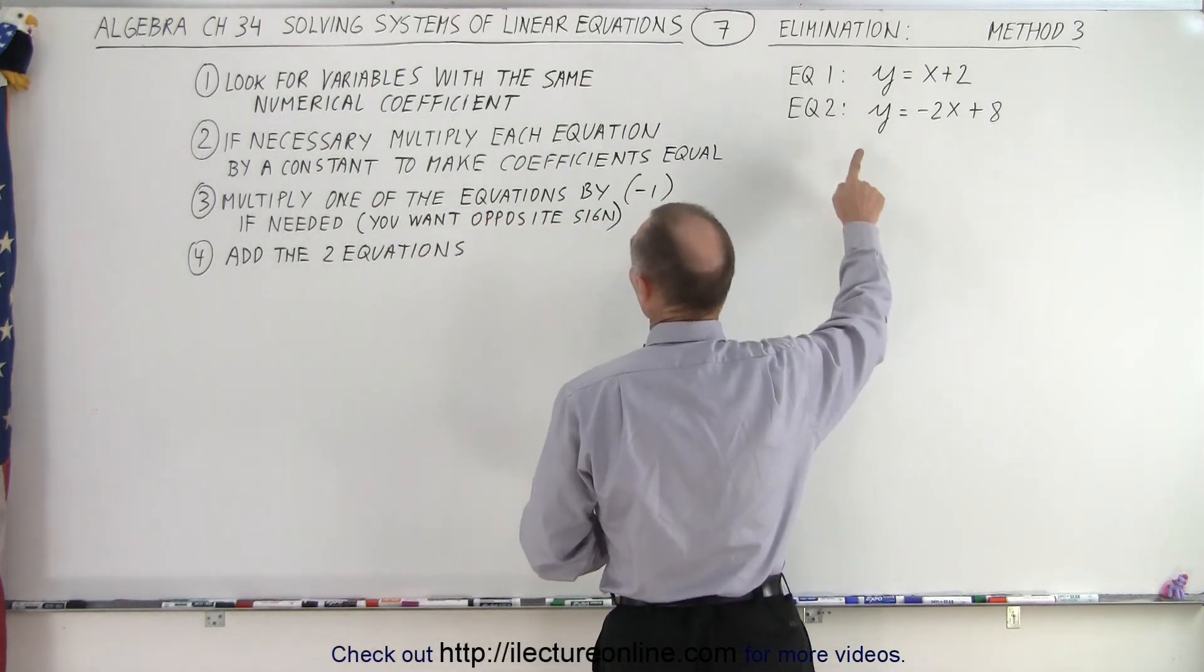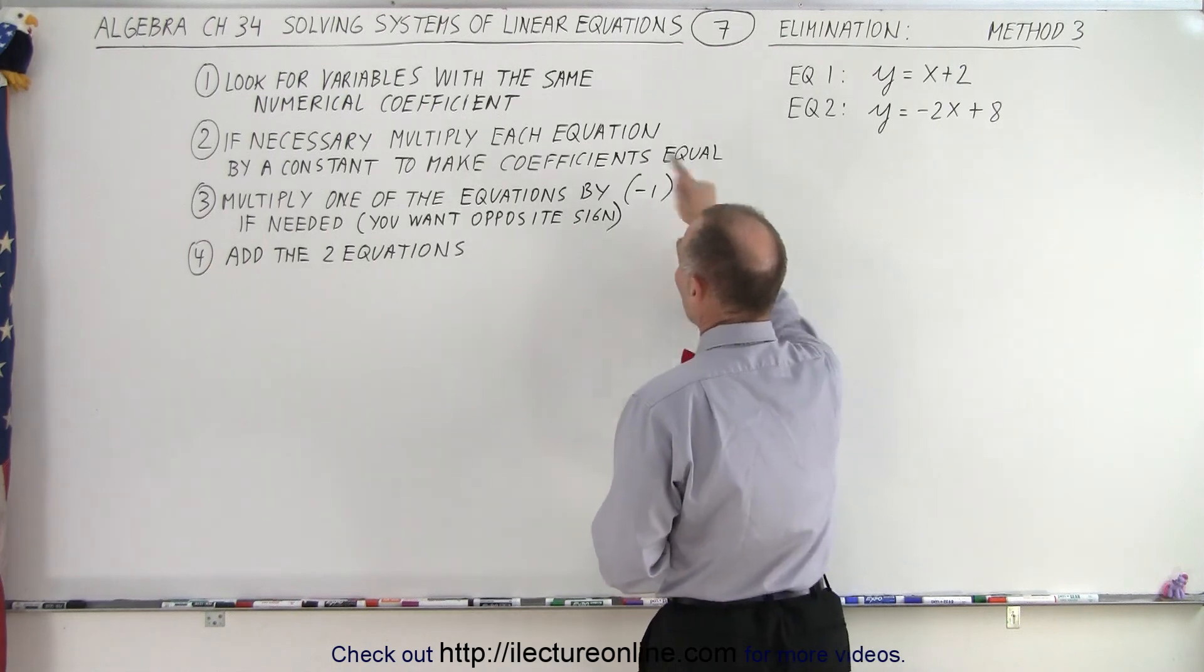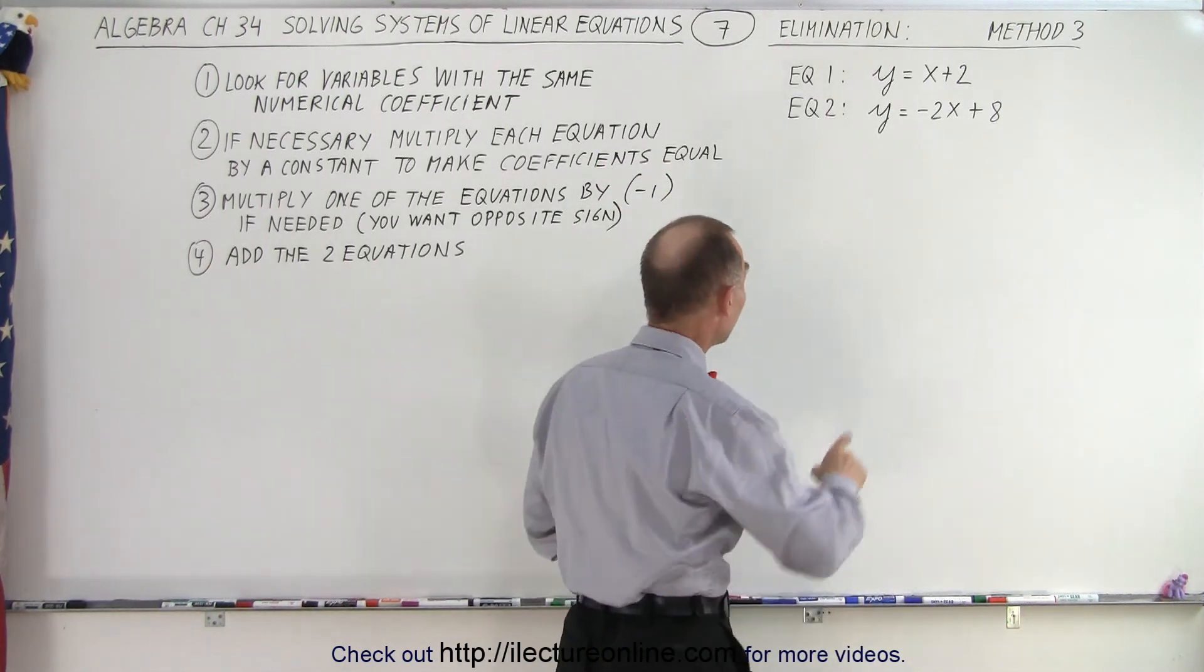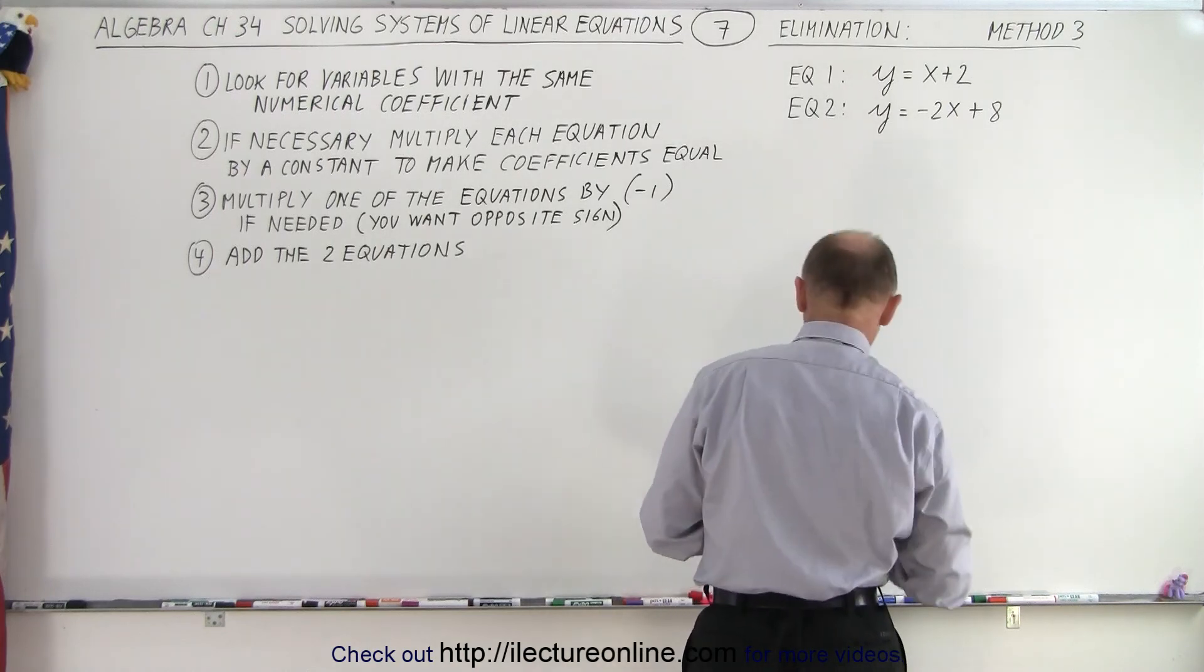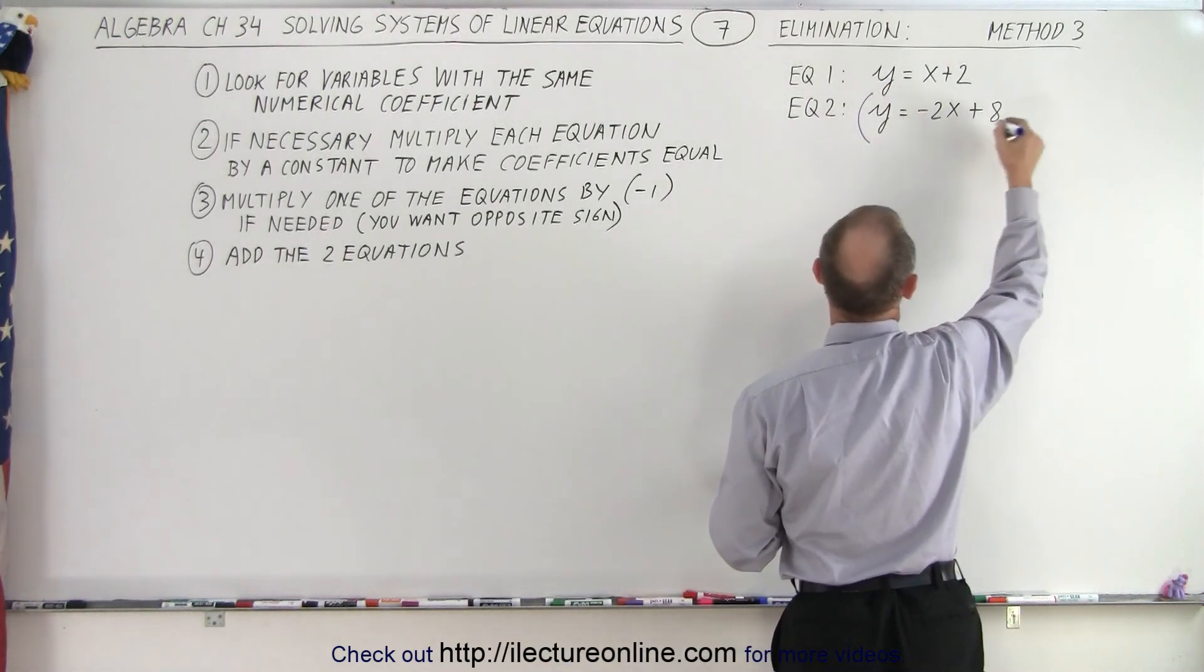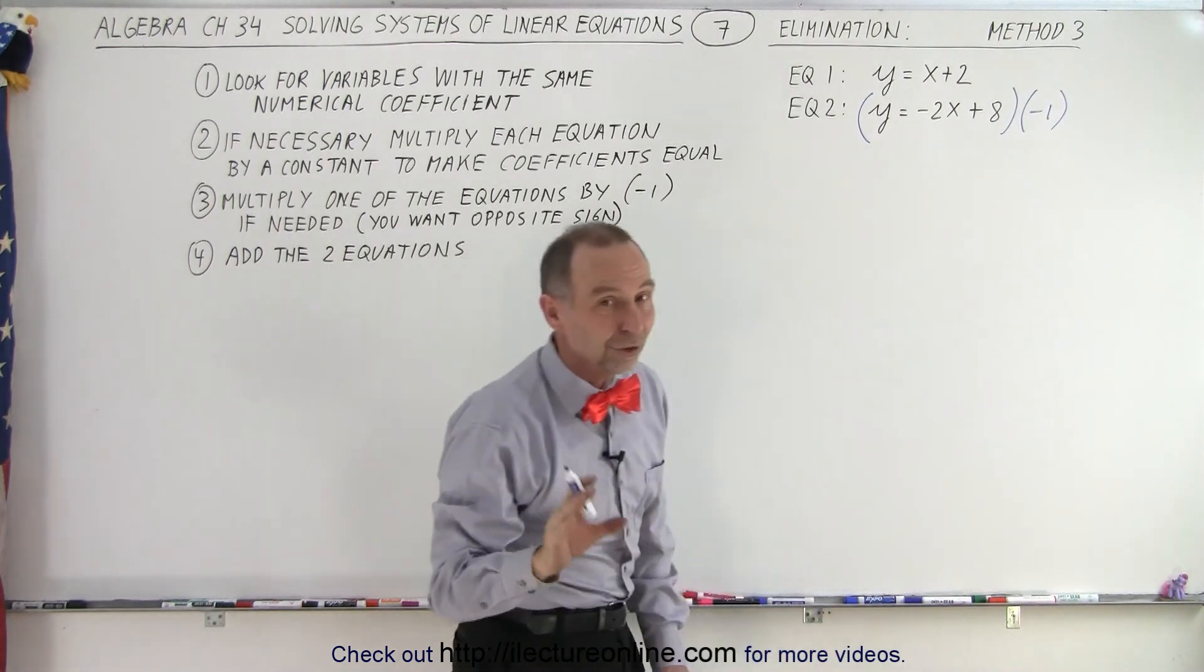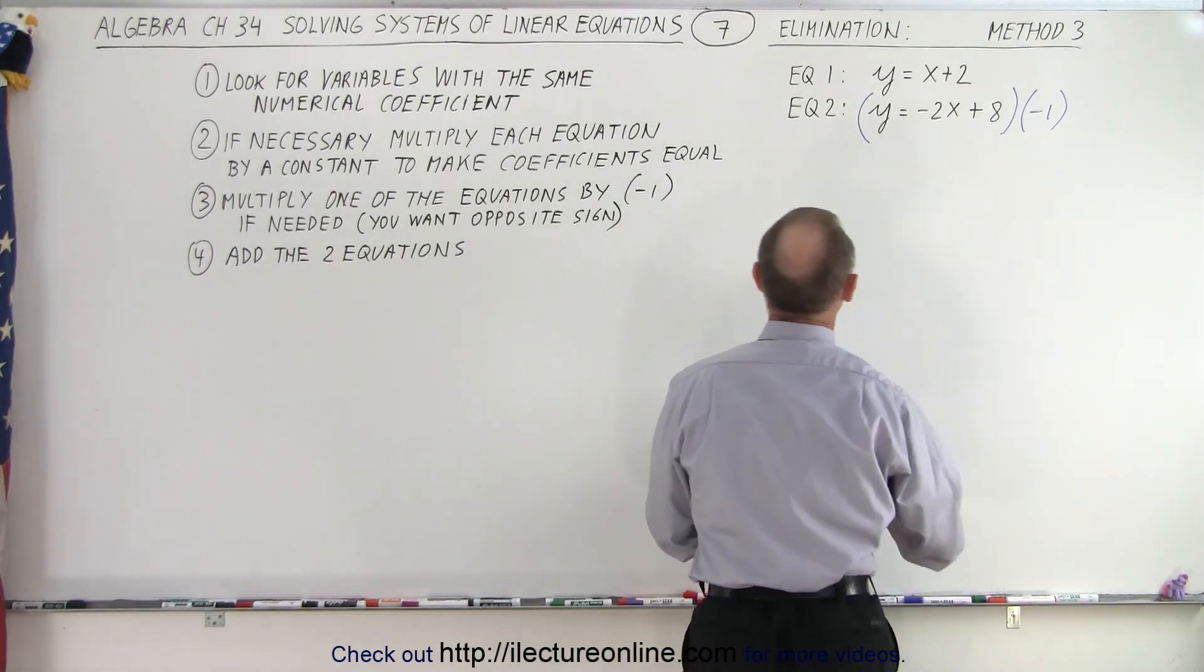All right, so let's do that. So first, look for variables with the same numerical coefficient, which is the y. We don't have to do number 2, because we did find one. So y does. And then we're going to multiply one of the equations by negative 1. So what I'm going to do here is use a different color. And we're going to multiply both the left and the right side equation by negative 1. Remember, we have to do the same thing to both sides of the equation.